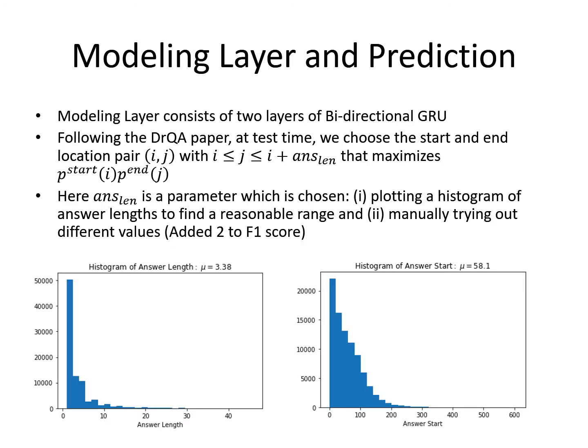I found two interesting results when looking at the modeling layer and the prediction algorithm at test time. For the modeling layer, I implemented the structure described in the BiDAF paper, which consists of two layers of bi-directional GRUs, and it gave a huge improvement over the baseline of about 20% in the F1 score. For the prediction at test time, we followed the DrQA paper, which basically maximizes the product of the start probability and the end probability based on some constraints around the location of the start and end words.